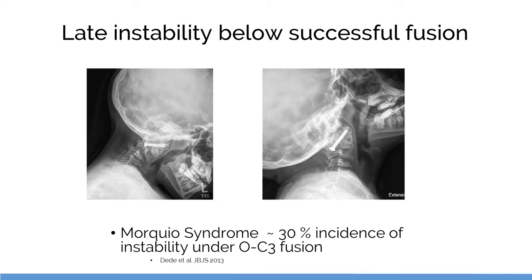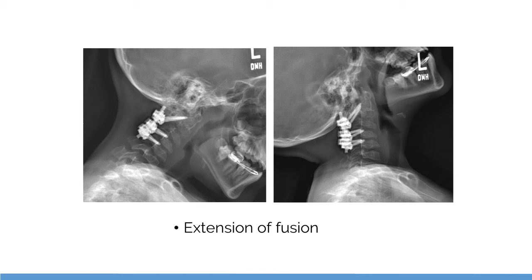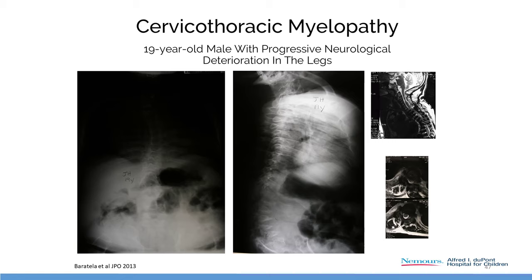About 30% of our group develop instability below an intact fusion, so we have to extend the fusion to control instability. There is also stenosis not only at the upper cervical spine but at the cervicothoracic junction and down with the kyphosis.